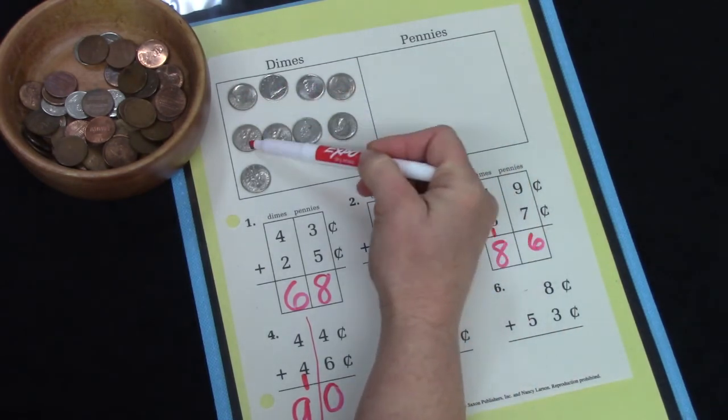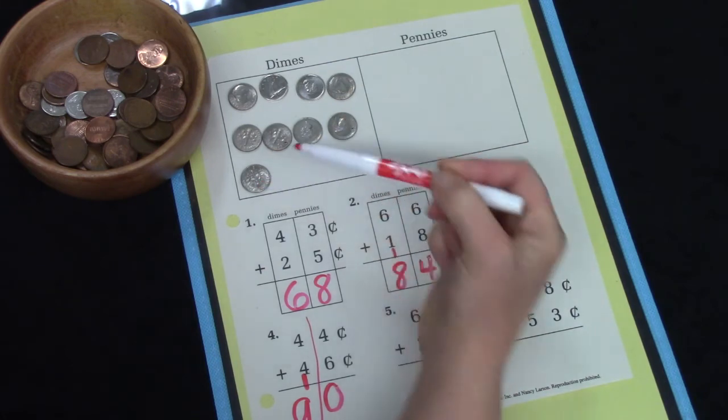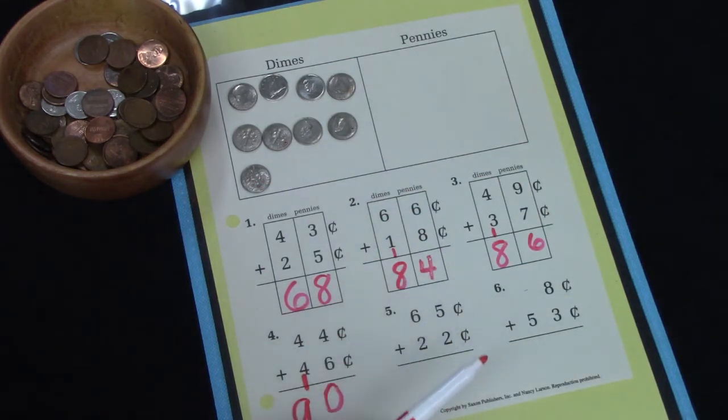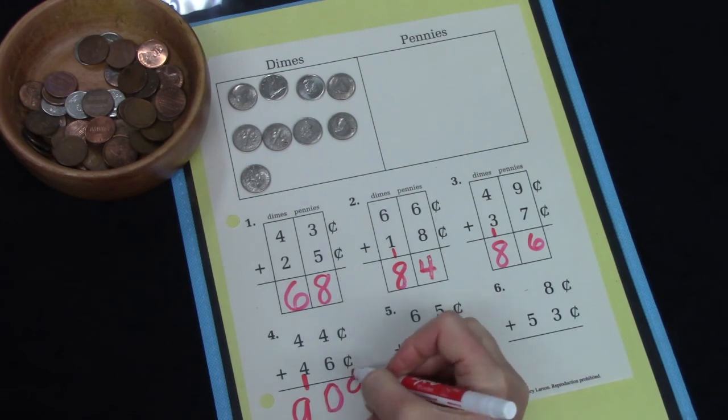4 plus 4 is 8 plus 1 more is 9: 10, 20, 30, 40, 50, 60, 70, 80, 90. I'll erase this line so it's not confusing. We have 90 cents.